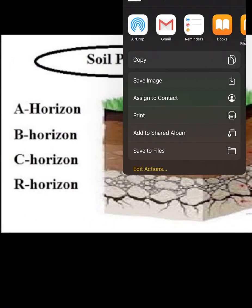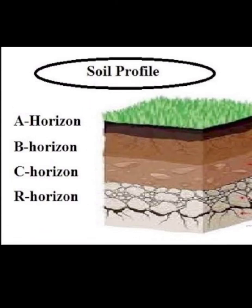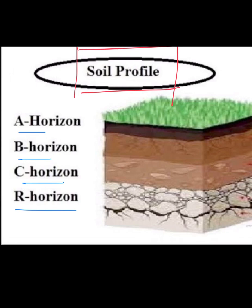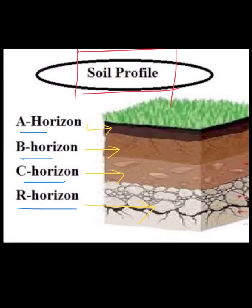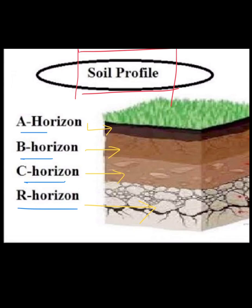Here in the soil profile diagram, we can see details. There are four horizons shown. This part here is one horizon, this part is another horizon — you can see vegetation and plants at the top going deeper into the profile.